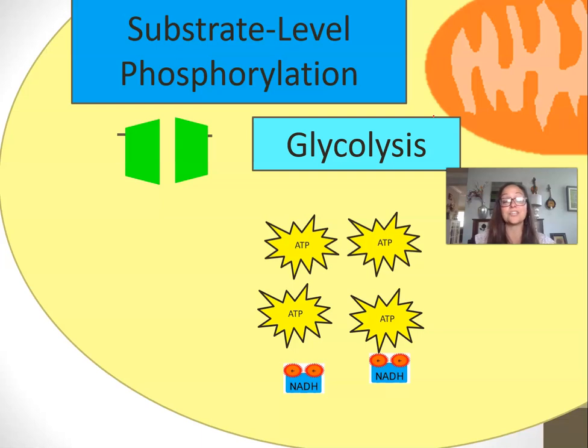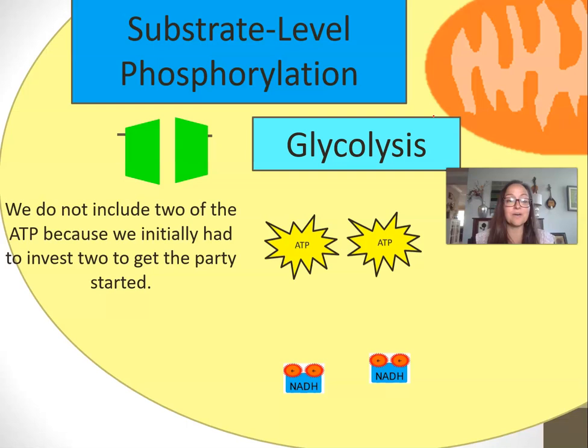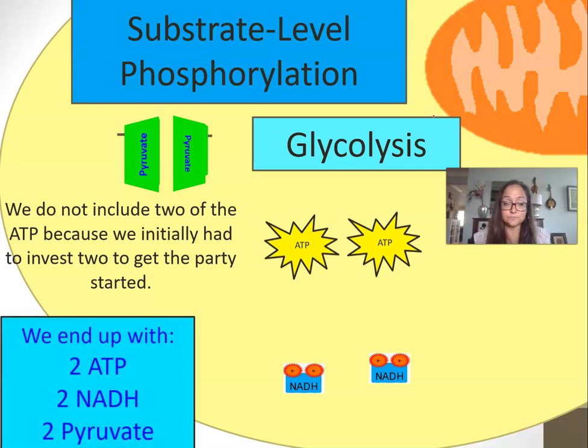If you recall, in the very beginning we actually had to invest two ATP, so actually our net gain of ATP during glycolysis is two. We get two ATP made by substrate-level phosphorylation, two reduced electron carriers NADH, as well as two pyruvates that each have three carbons. At the end of glycolysis: two ATP, two NADH, and two pyruvates.